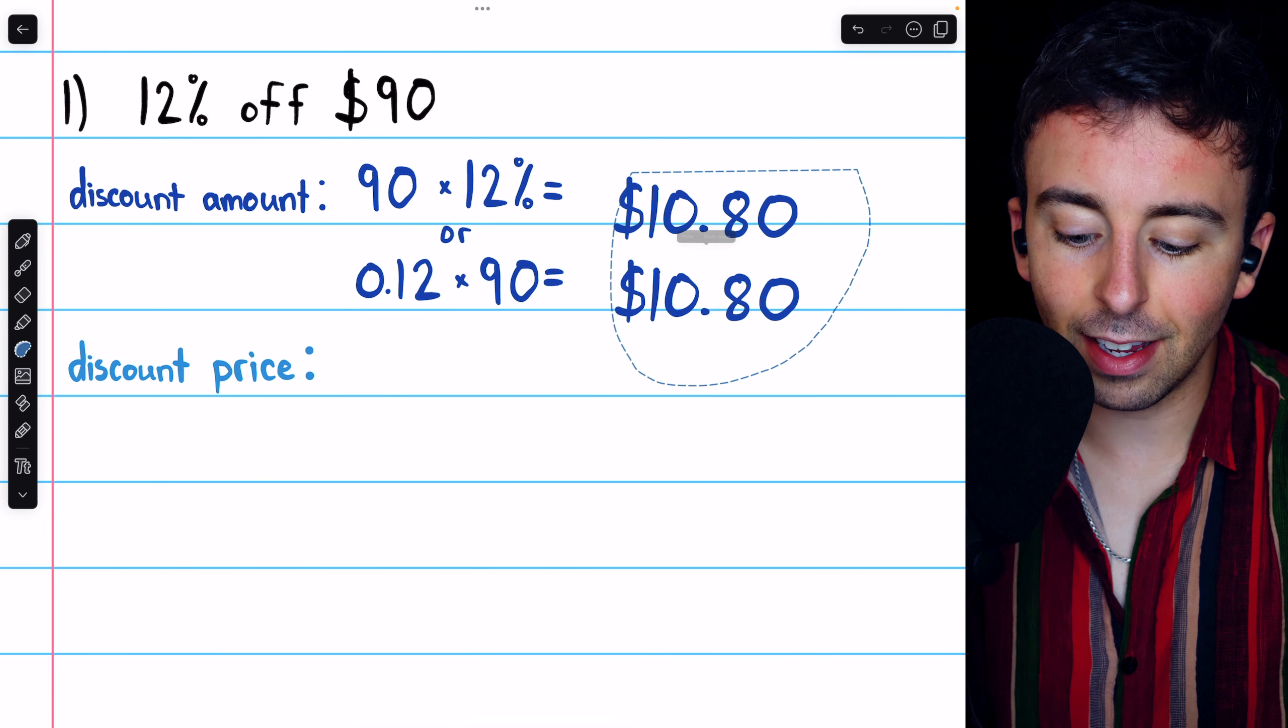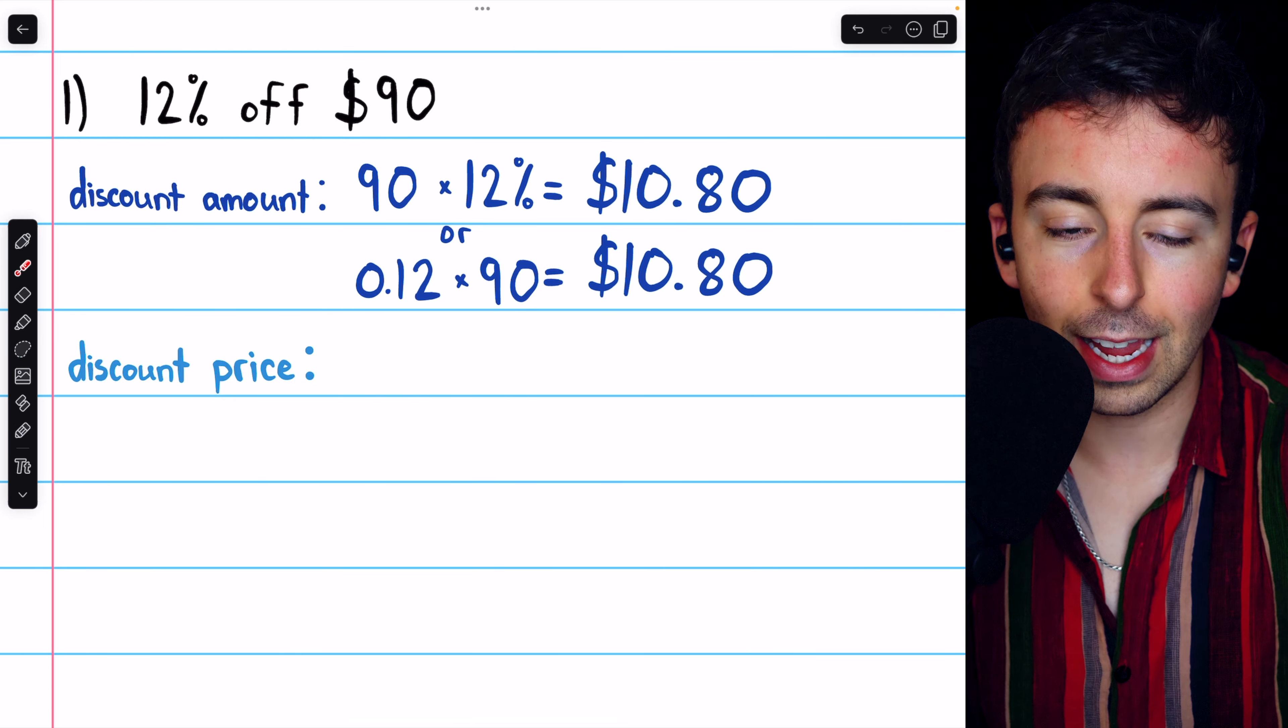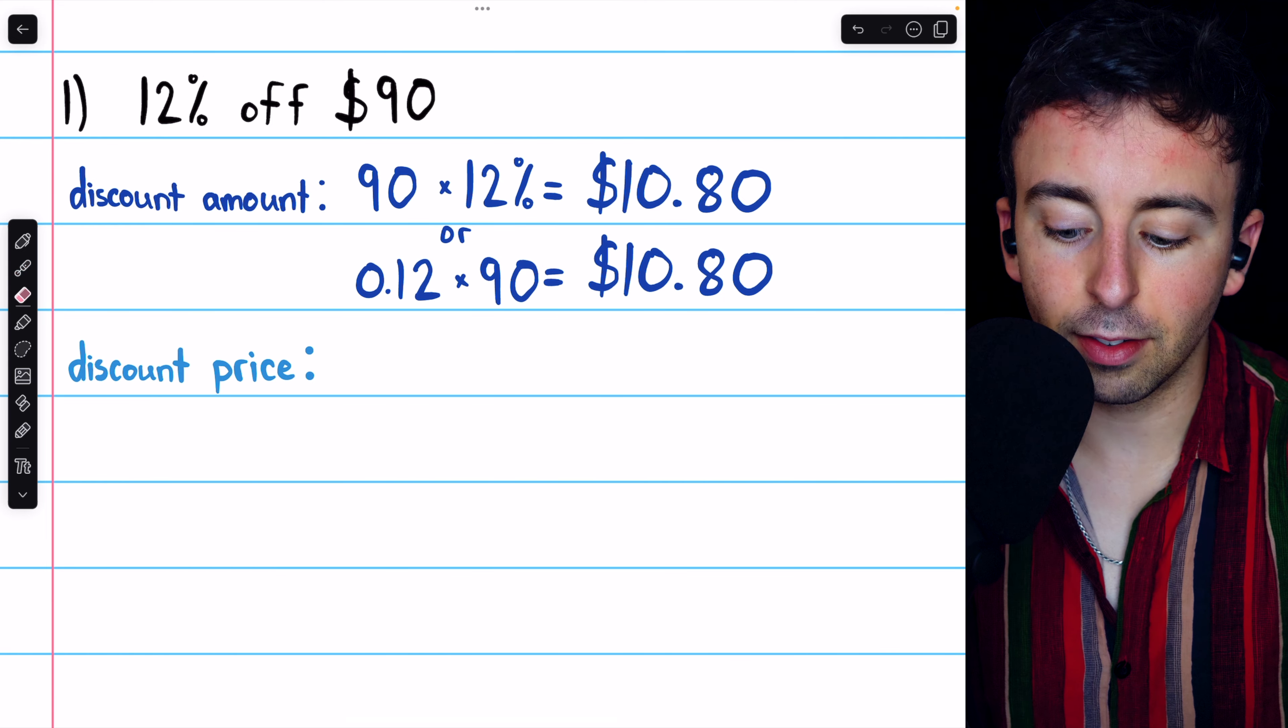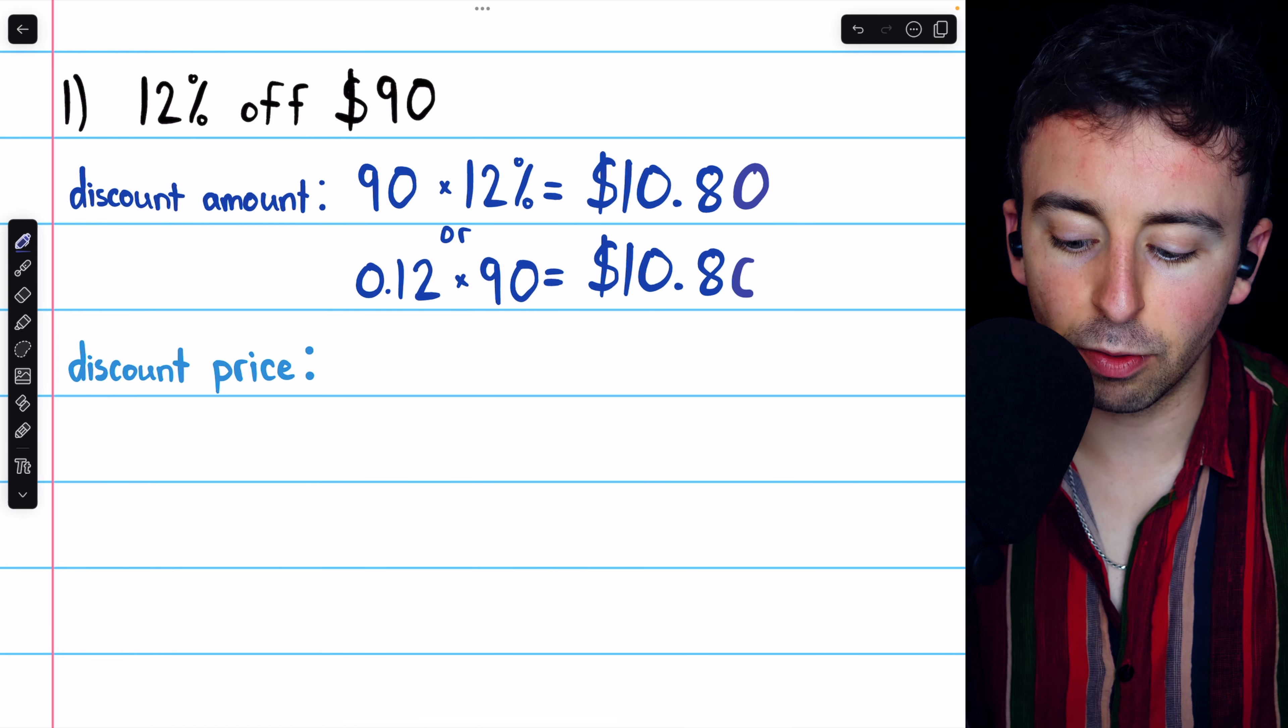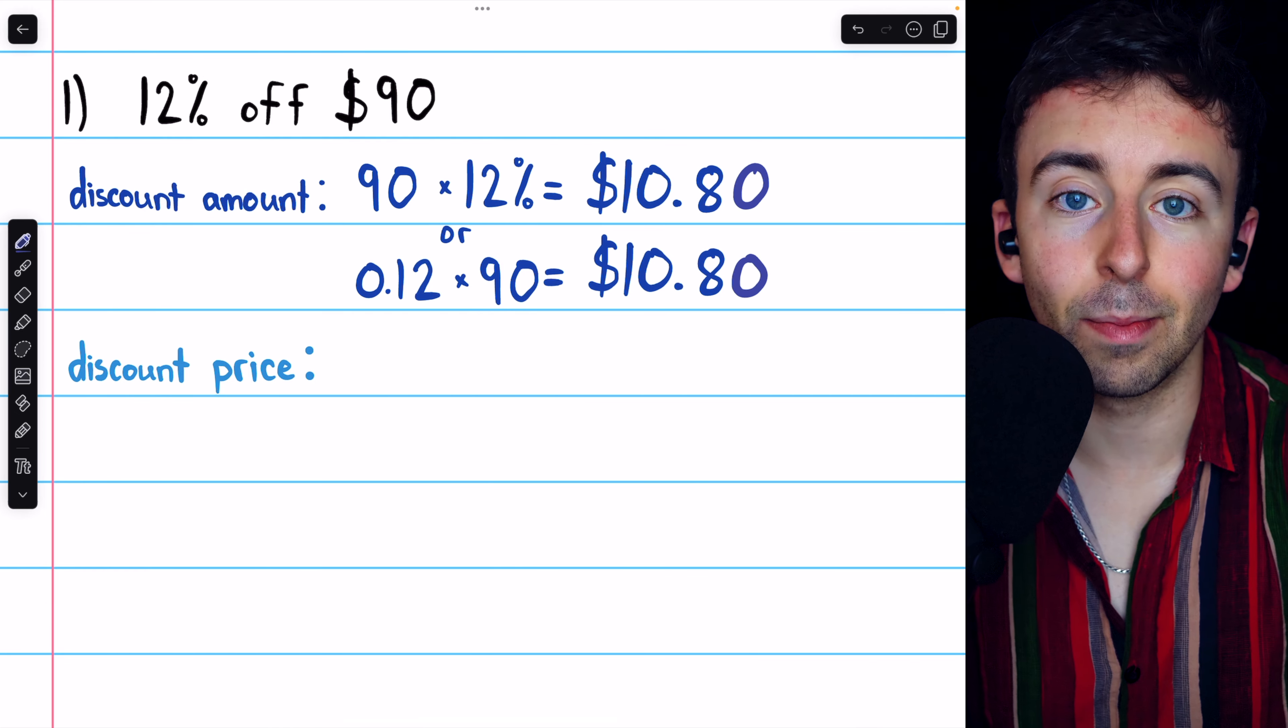Either way, you'll find the correct discount amount is $10.80. You may just see this on your calculator as 10.8, but we write it as 10.80, just because this is how currency is typically written.